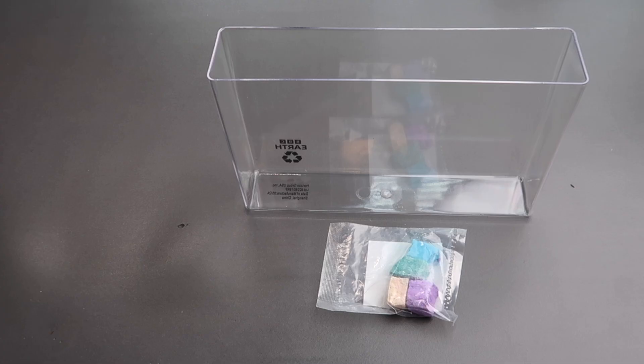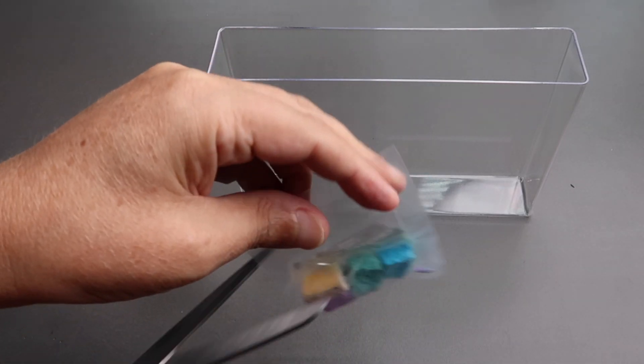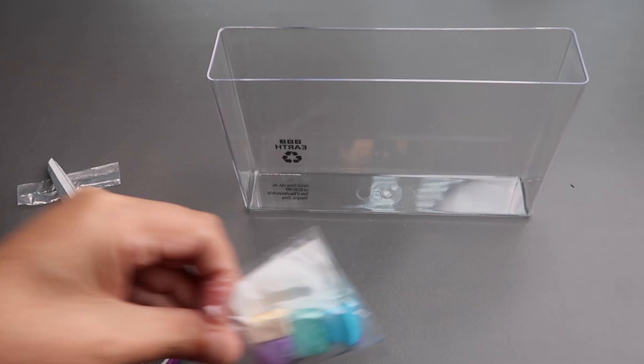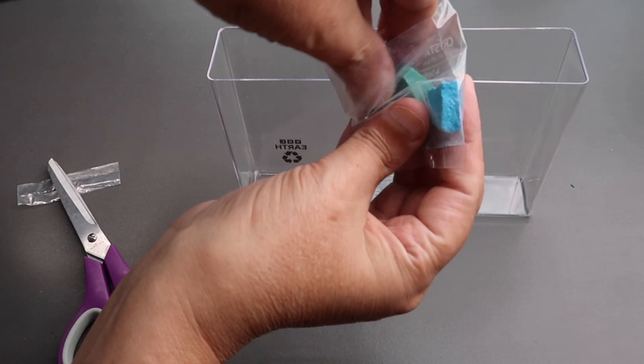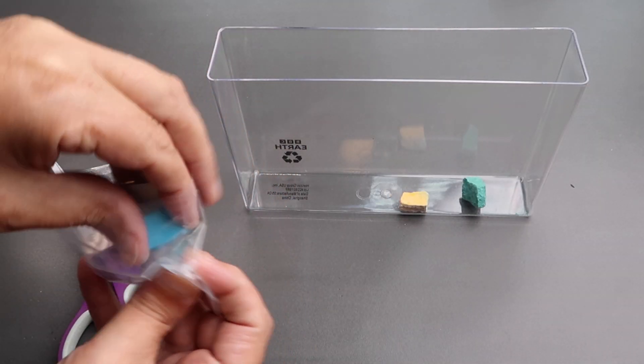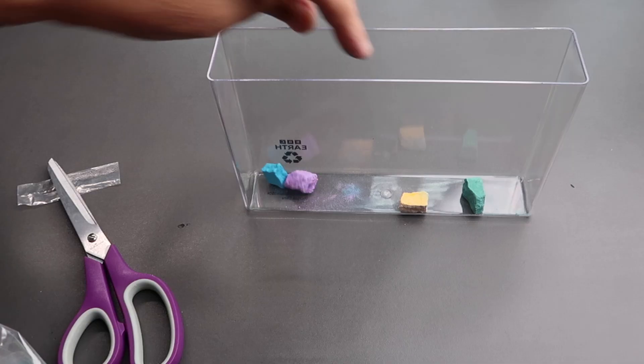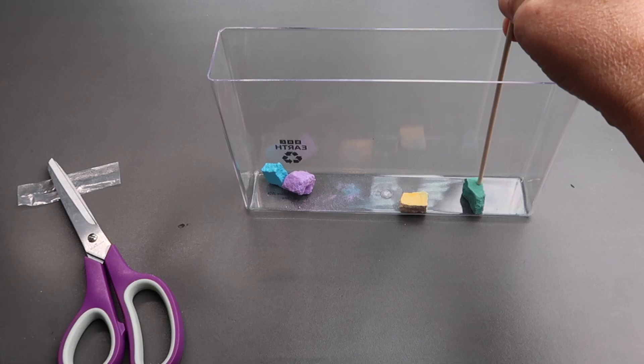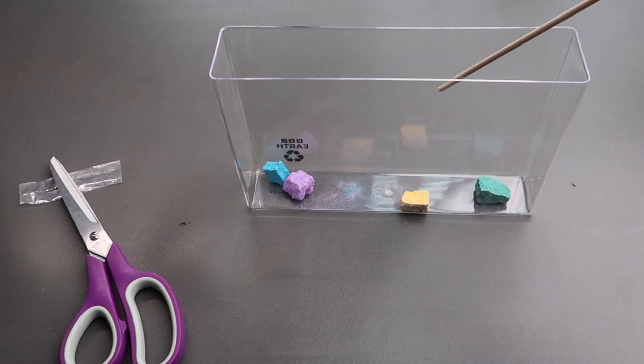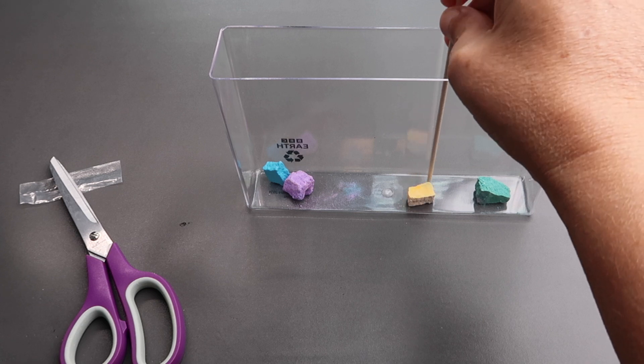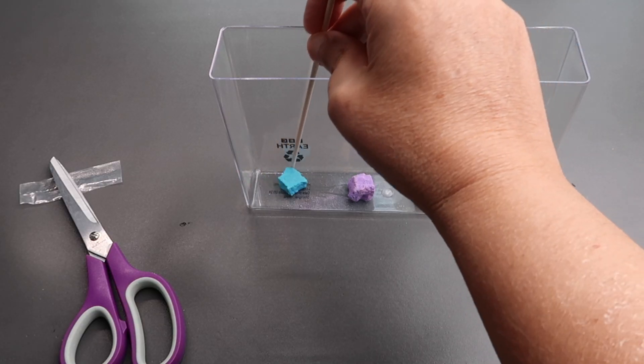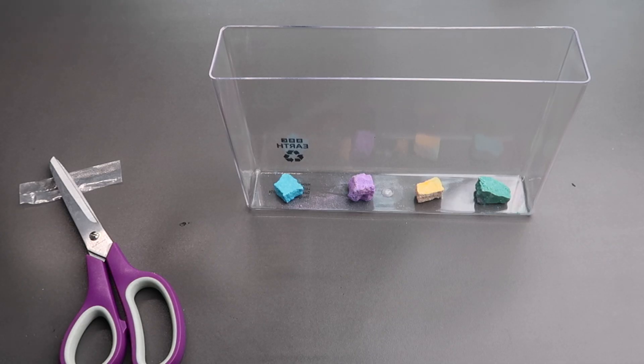The first step is to put our crystal rocks in the aquarium. We're going to try and spread them out to get a good distribution of crystals, and the trick is not to have them touch the sides. I'm going to use this mixing stick to position my crystal rocks evenly spread, not touching the sides, like so.